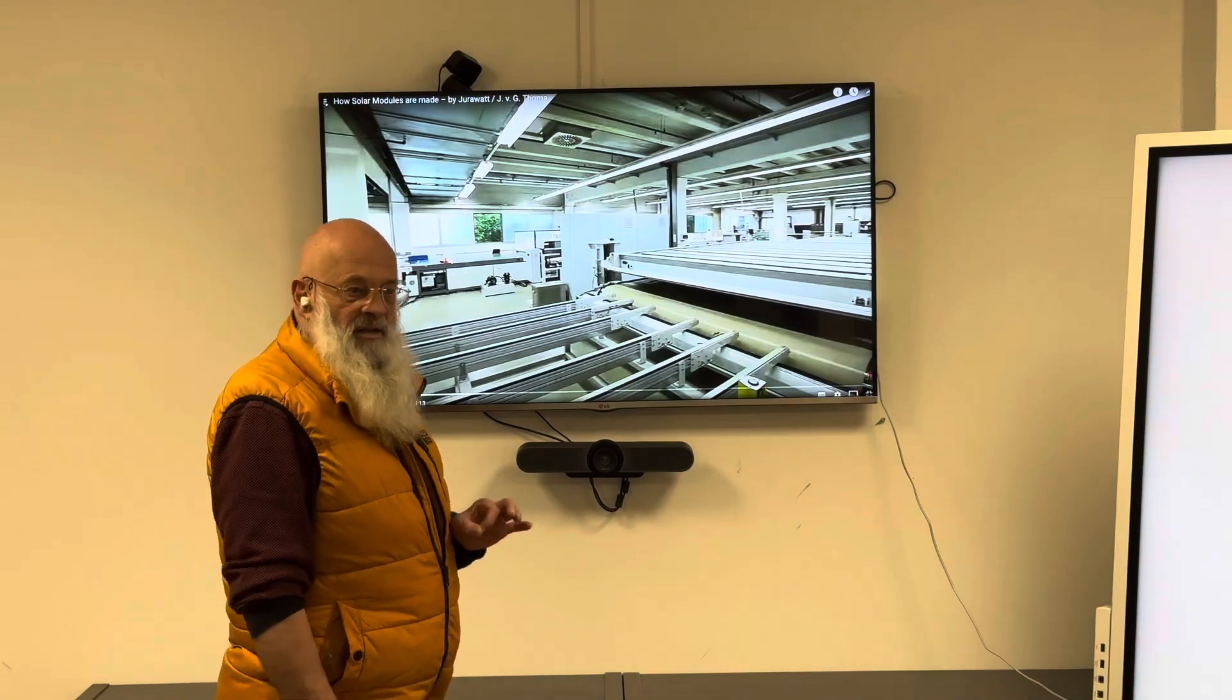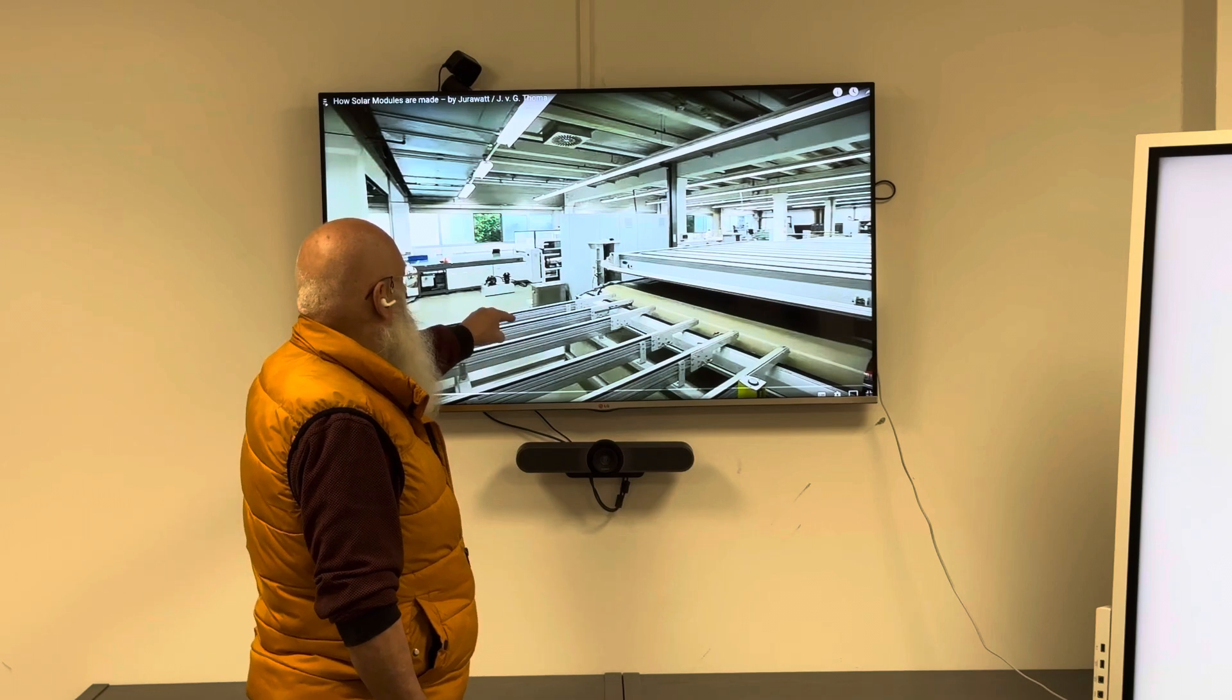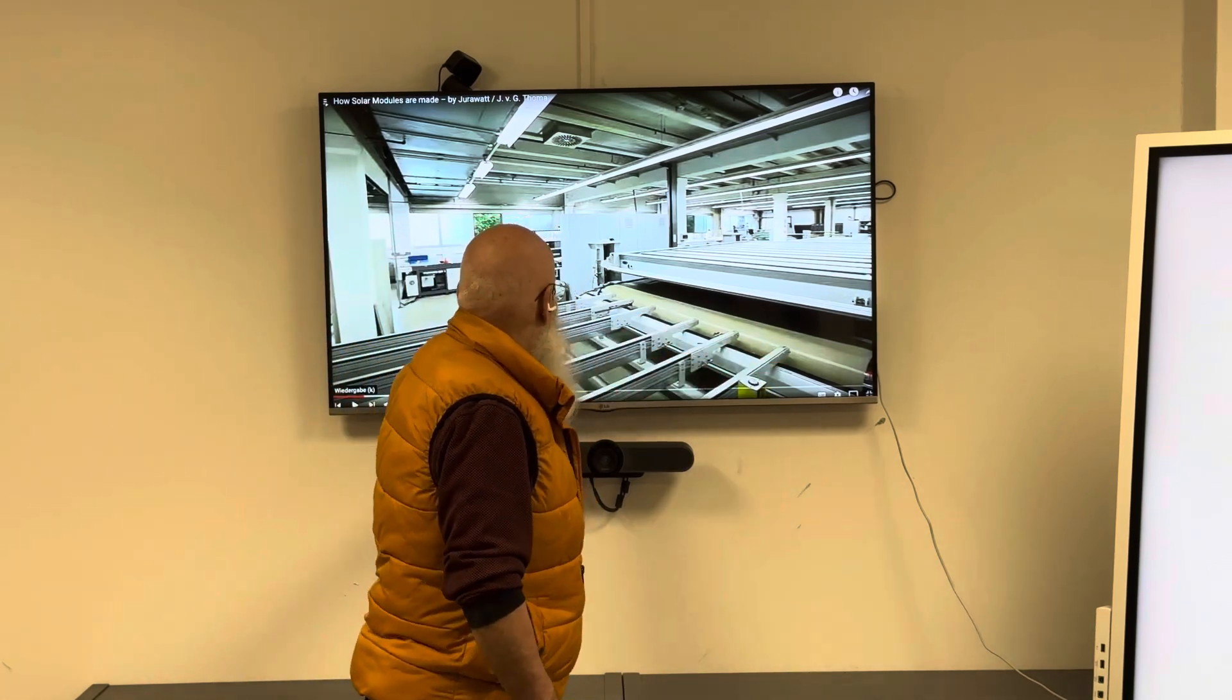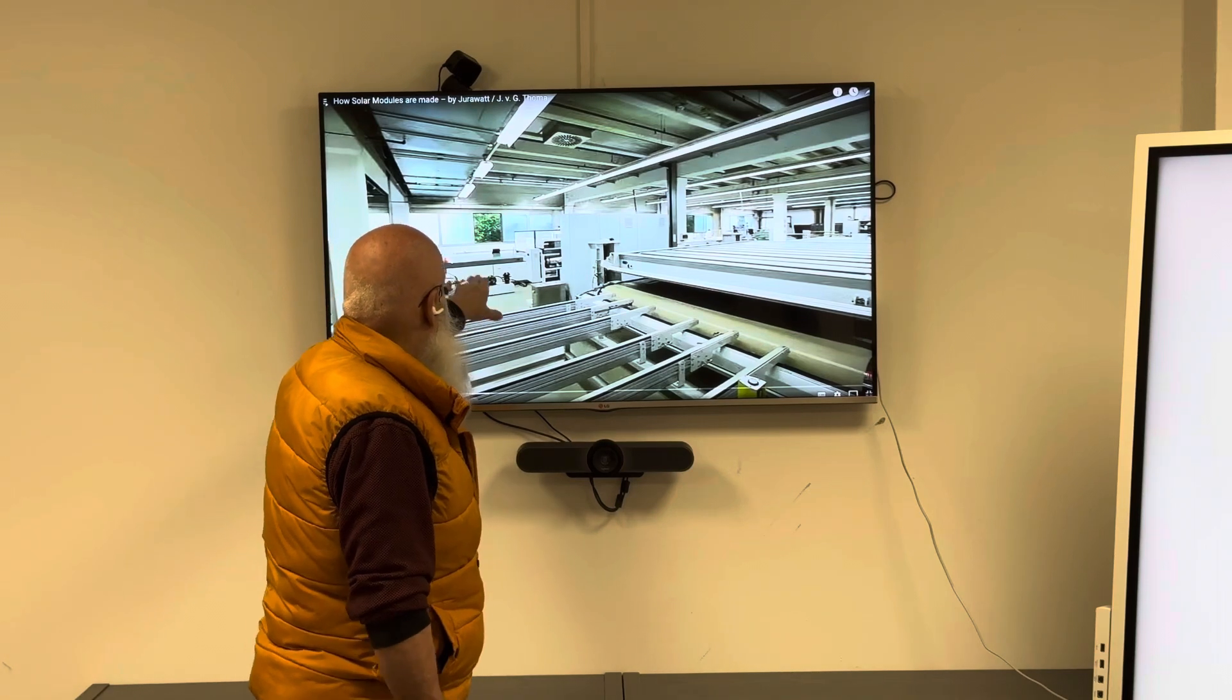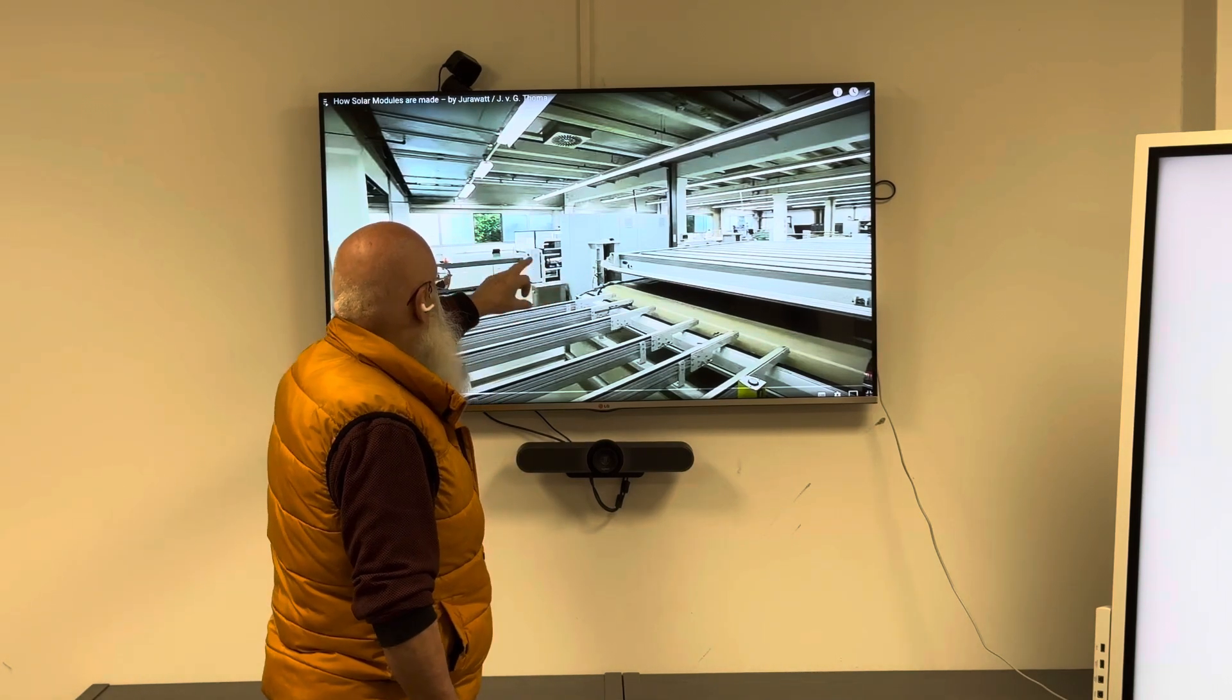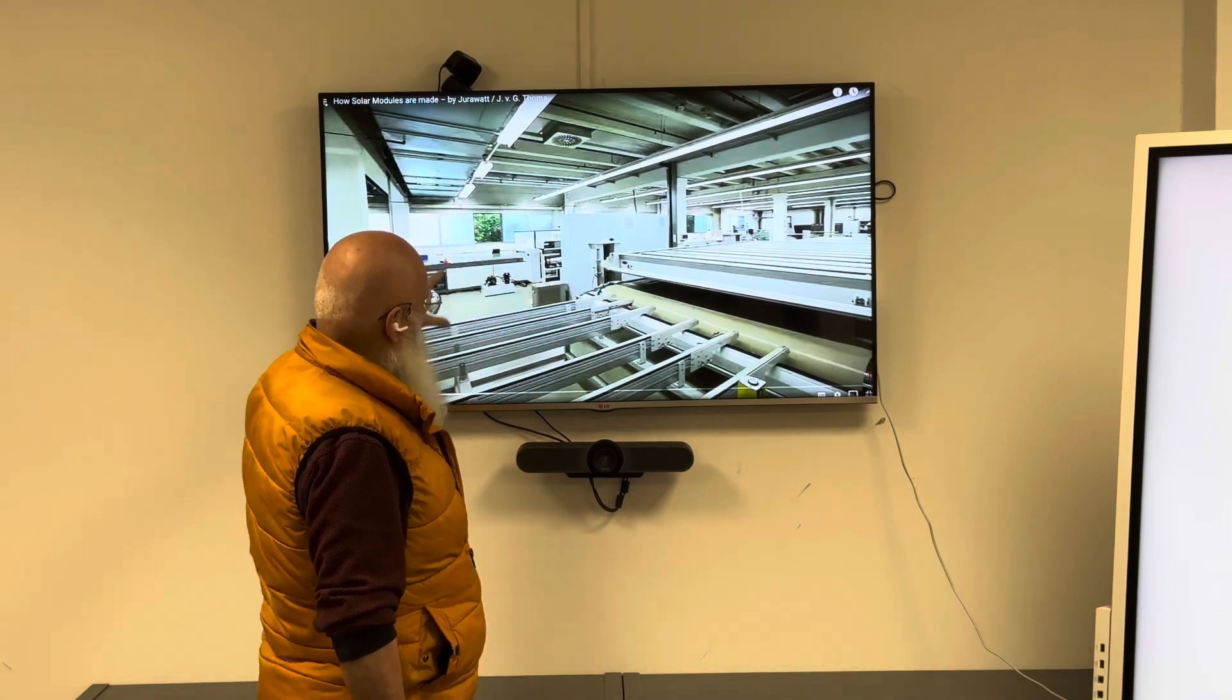This is another line we did in the past, it's about 150 megawatts. You see laminator one, this is the loading area. This is the loading area of laminator two, this is the lamination area, and this is the unloading area. You see the factory in total.